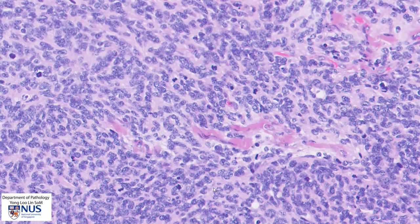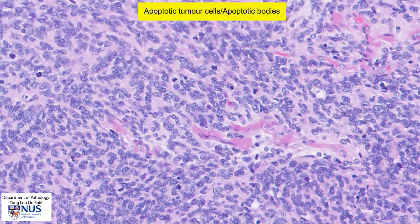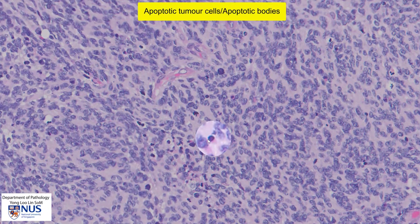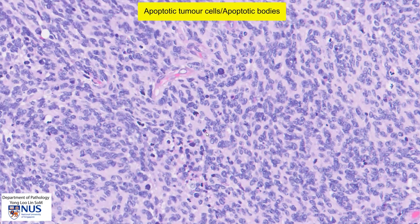Another feature that we can sometimes see in medulloblastomas, relating to its rapid cell turnover and rapid growth, is the presence of apoptotic tumor cells. These are tumor cells that have died without inciting an inflammatory response. In this field, we can see several apoptotic bodies — for example, this cell here with a pyknotic nucleus and a very condensed eosinophilic cytoplasm. This is an apoptotic tumor cell, and here is another one.